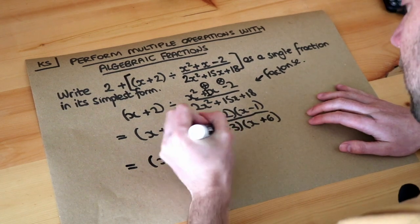Now nothing here cancels at the moment. There's no common factor top and bottom, but let's think how we deal with this division. When we divide algebraic fractions, we saw in a previous video, we can do keep, change, flip. So keep, change divide into a times, and flip this fraction.